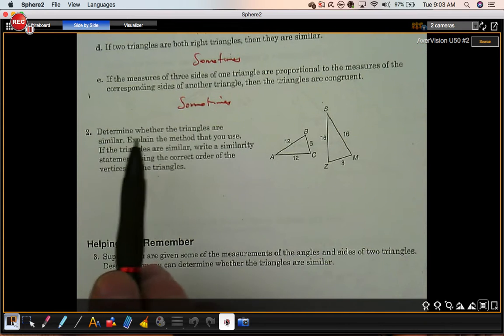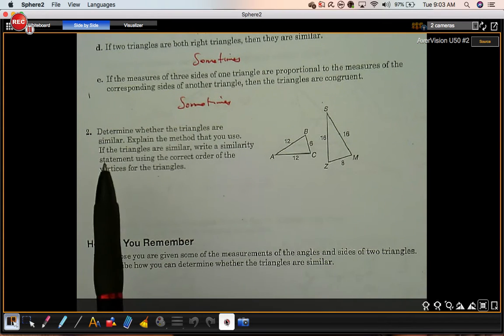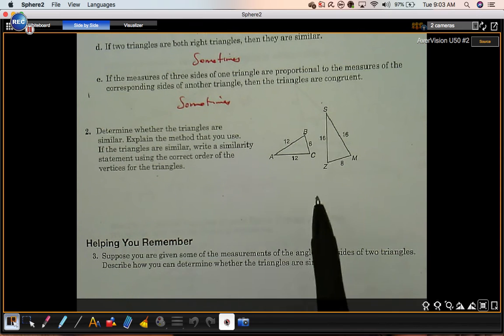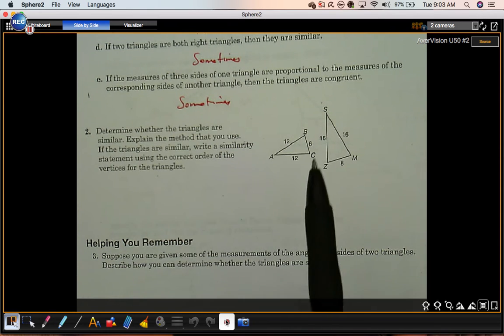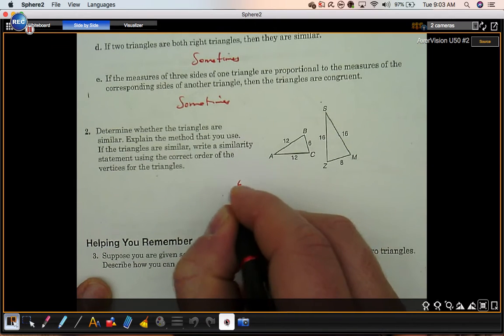Number two. Determine whether the triangles are similar. Explain the method that you use. If the triangles are similar, write a similarity statement using the correct order of the vertices of the triangles. So if this triangle is going to be similar to this triangle, then the smallest side is going to have to correspond with the smallest side. That's just the way that it works.